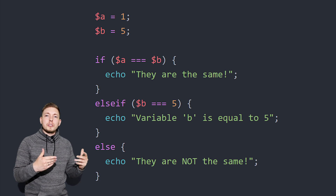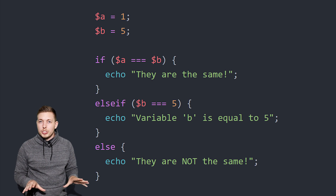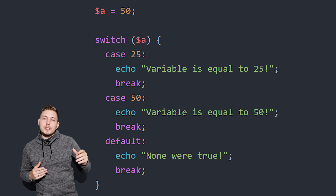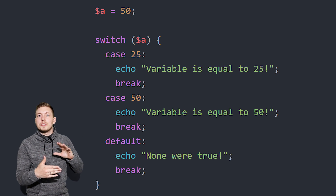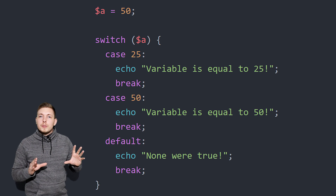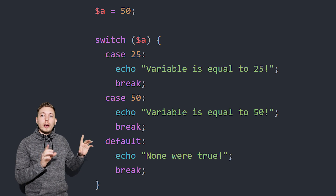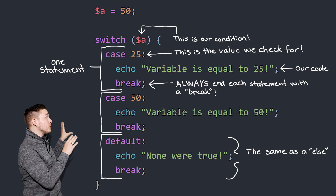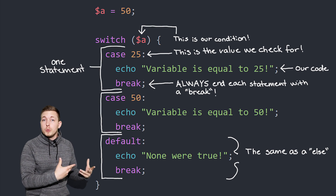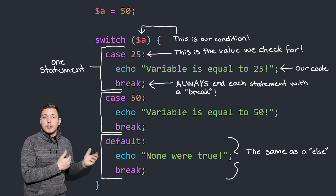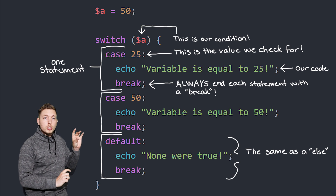Having talked about if, else if, and else statements, we're also going to talk about something called a switch. A switch is kind of similar to an if statement, or at least a chain of if-else if-else statements, in that we can use it for sort of the same thing — but not quite. As you can see here, I have a simple switch statement, which is going to check for a certain value from a certain variable, and depending on the value, it's going to run a certain block of code inside the different cases.